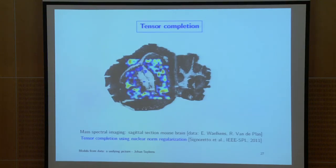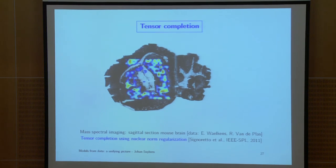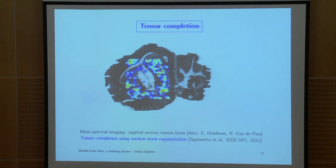Here is another example in the area of mass spectral imaging, using trace norm regularization. There is also interest in compressed sensing, sparsity, and matrix completion problems — and we have extended this framework to matrix completion problems as well.